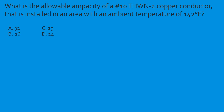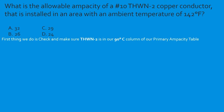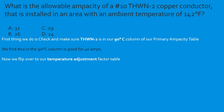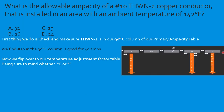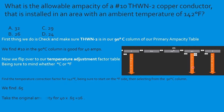Question: What is the allowable ampacity of a number 10 THWN-2 copper conductor installed in an area with an ambient temperature of 142°F? THWN-2 is in the 90°C column. Number 10 in the 90°C column is good for 40 amps. Go to the temperature adjustment table, start on the Fahrenheit side, find 142°F, tee off with 90°C — correction factor is 0.65. So: 40 × 0.65 = 26 amps. Select B.